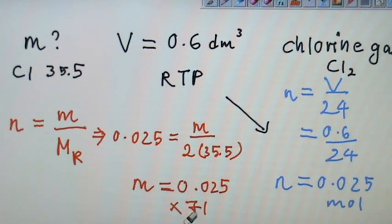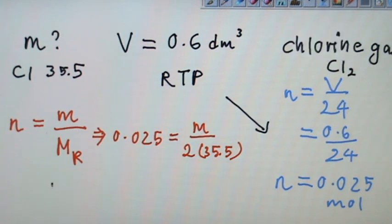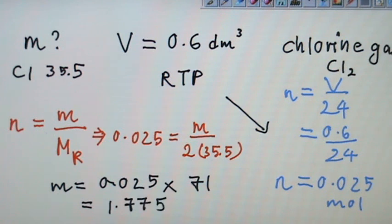Mass equals 0.025 times 71. You will get 1.75 grams of substance.